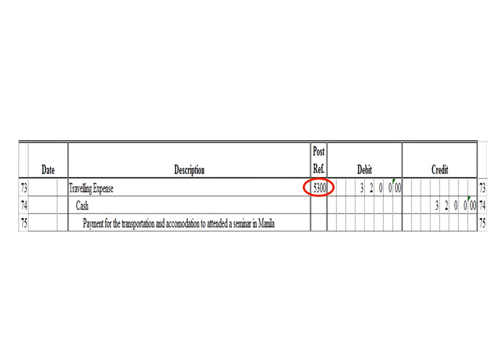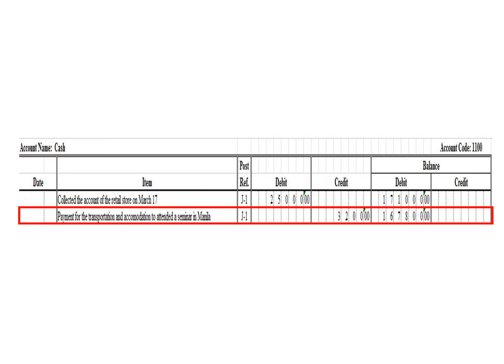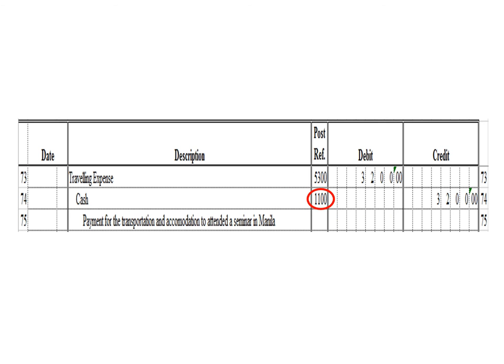Let us post the credit entry — a credit to cash for 3,200 pesos. In the cash ledger, we write the description: payment for transportation and accommodation to attend a seminar in Manila, posting reference J1. Under the credit column, write 3,200 pesos. The balance is 167,800 pesos — previous balance 171,000 debit minus 3,200 credit. As of March 30, the cash ledger balance is 167,800 debit. After posting, write posting reference 1100.